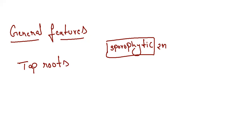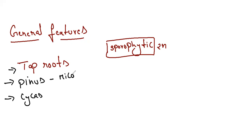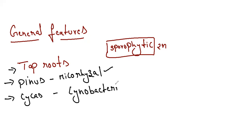The roots of Pinus have a mycorrhizal association — a fungal association with the roots for absorption. Cycas has a special association with cyanobacteria — coralloid roots that carry out nitrogen fixation with organisms like Anabaena and Nostoc. So roots of Pinus have mycorrhizal association for absorption, and Cycas has coralloid roots for nitrogen fixation.